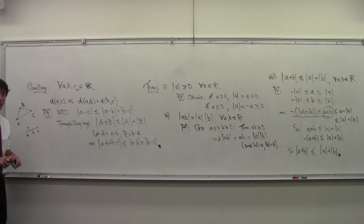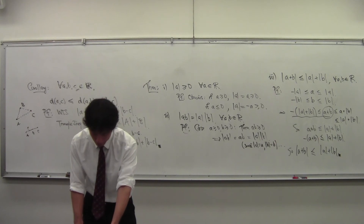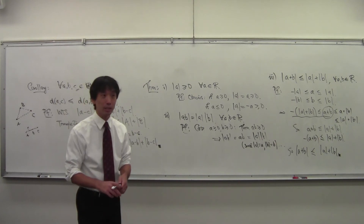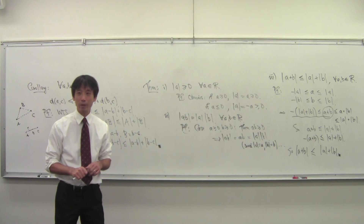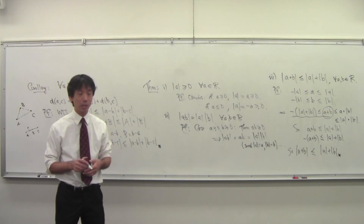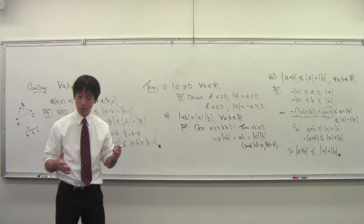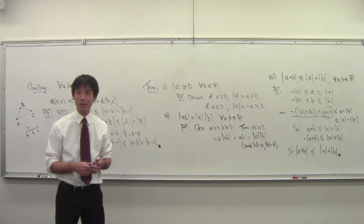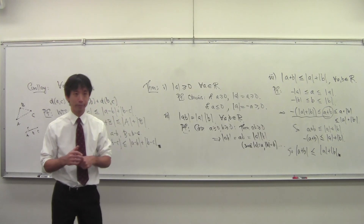I don't want to get into the next section today, but just to give you a preview: the next section is something called the completeness axiom, or the least upper bound axiom. This is a property of the real numbers that distinguishes it from the rational numbers — it is that which the real numbers has that the rational numbers doesn't have. So you might want to take a look at it before class next time, because now we're really stepping into new territory. This is important new territory. Take a look at section four.